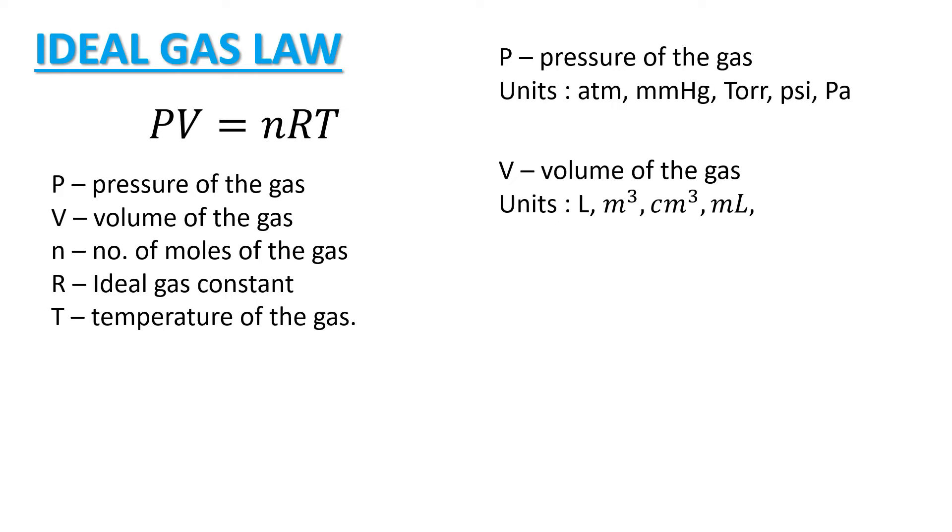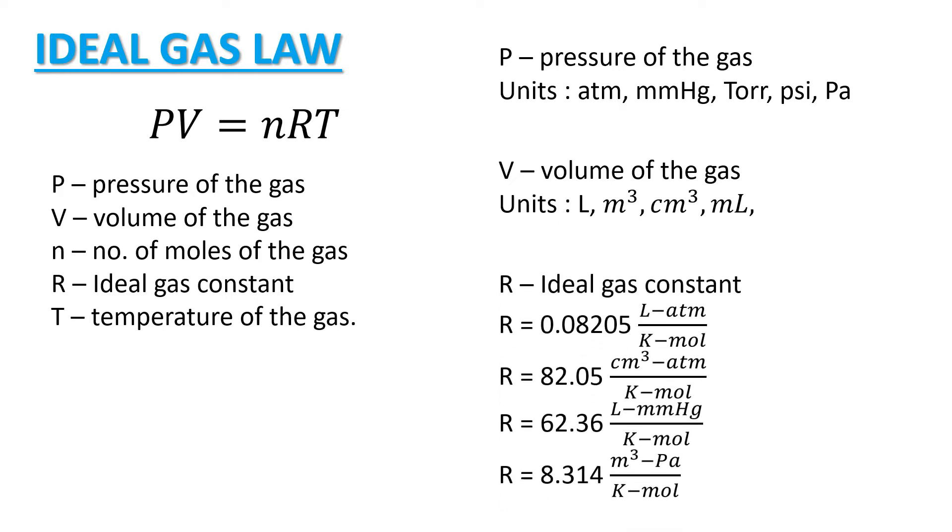And these are the different Ideal Gas Constant. So we may use R is equal to 0.08205 liter atmosphere per Kelvin mole or 82.05 cubic centimeter atmosphere per Kelvin mole or it could also be 62.36 if our unit for this ideal gas constant is L mmHg over Kelvin mole or 8.314 if the unit will be cubic meter pascal per Kelvin mole.